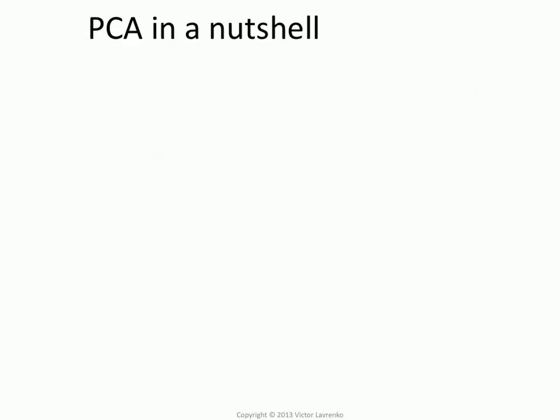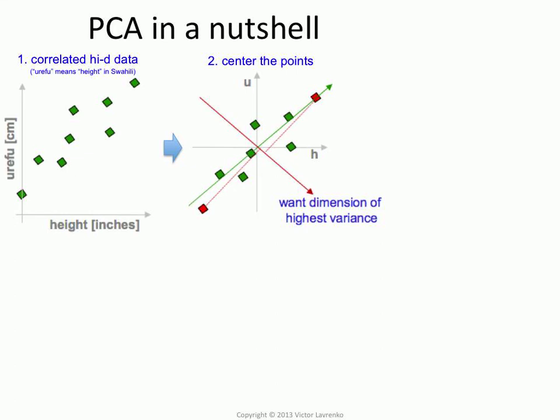Let's recap PCA. We start with high-dimensional data, and the attributes in that data are correlated. So we have our heights and refus, and they turn out to be the same thing. We want to reduce the dimensionality of the data.